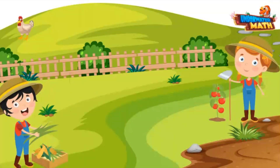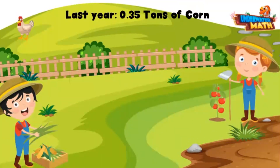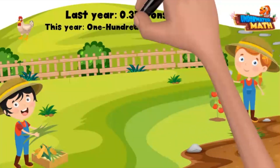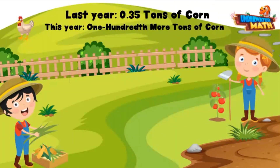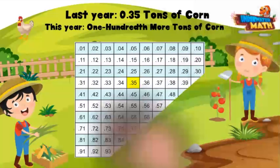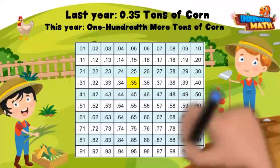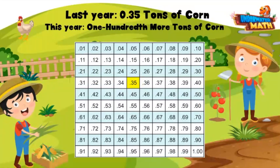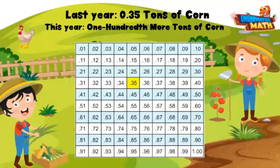This is my brother Sammy. He grew 0.35 tons of corn last year. This year he grew one hundredth more tons of corn. We can also look at a hundredths chart to help us out. Remember, as you move from one square to the next you are counting up or down by one hundredth. If we want to know one hundredth more, we can look one square to the right of 0.35.